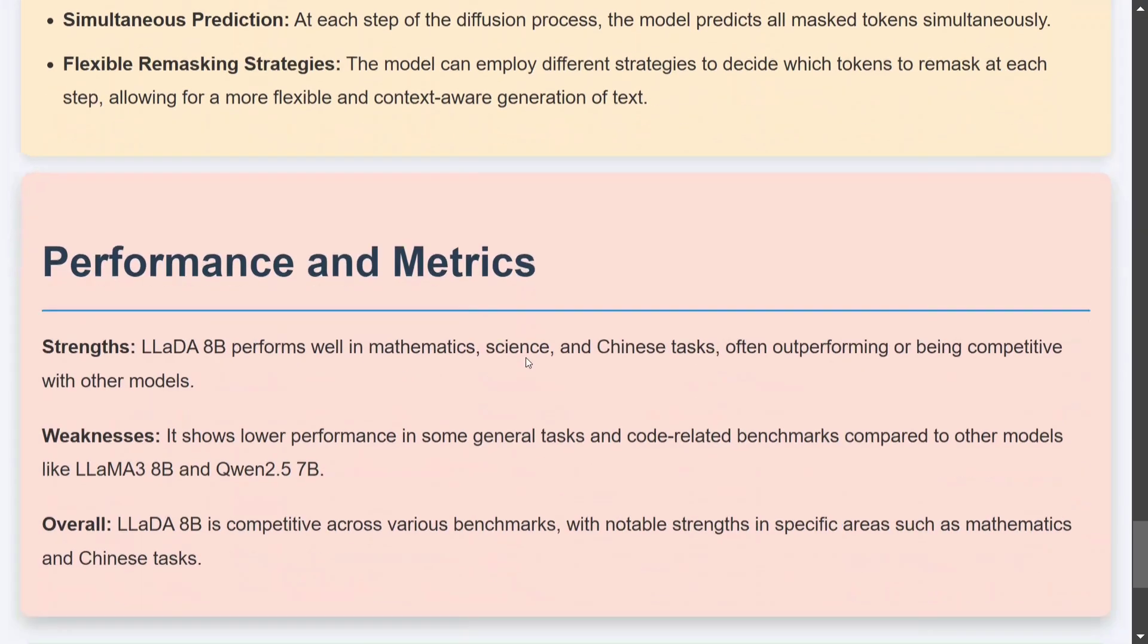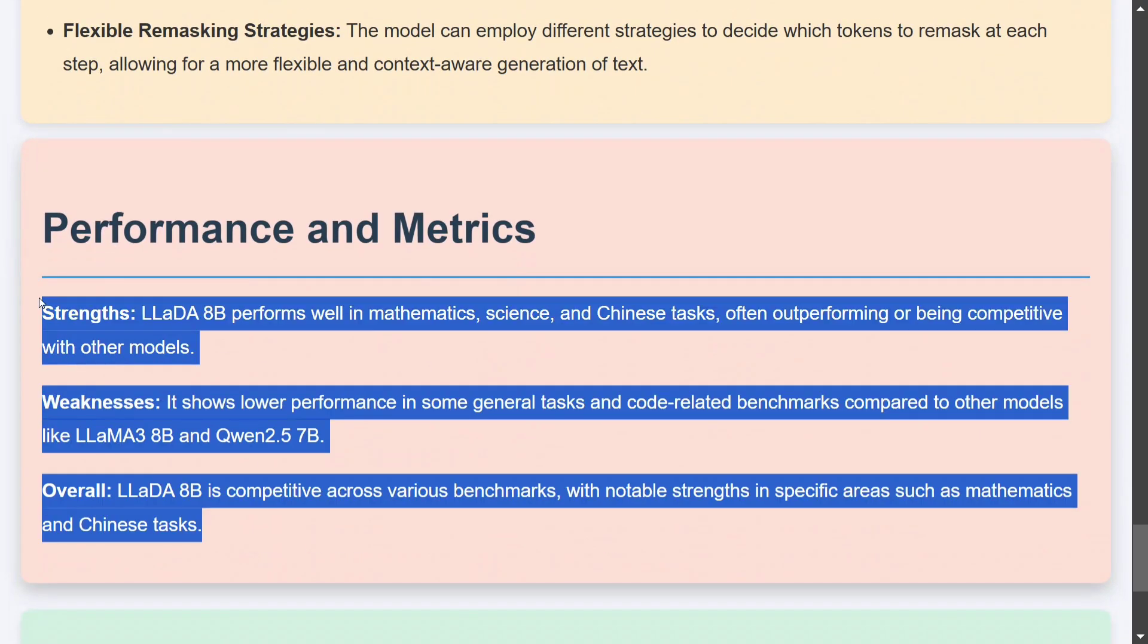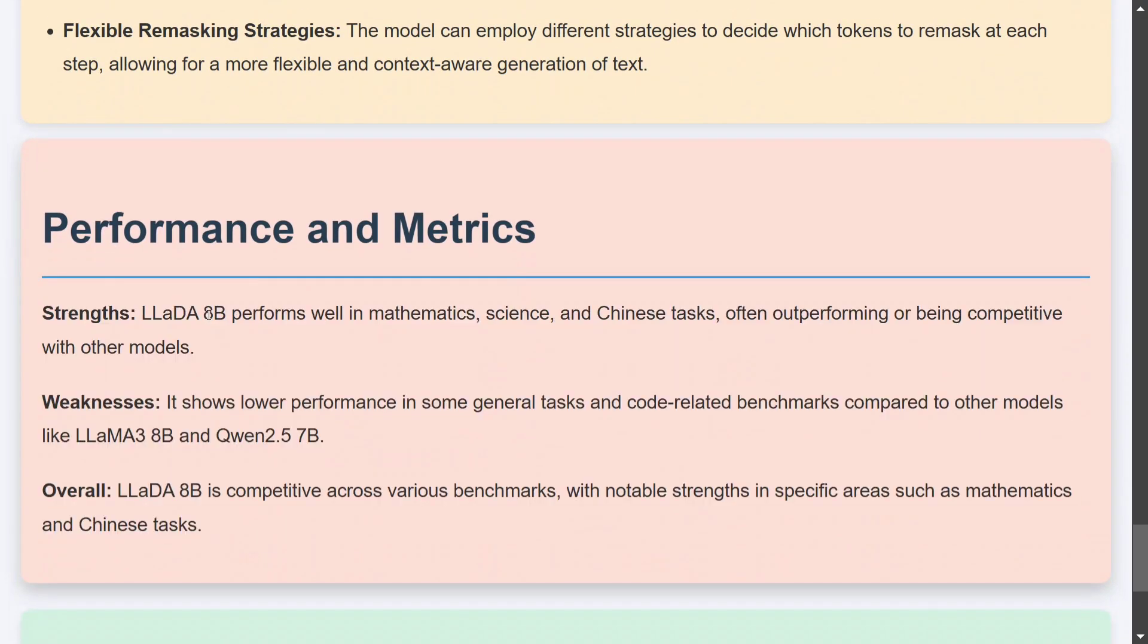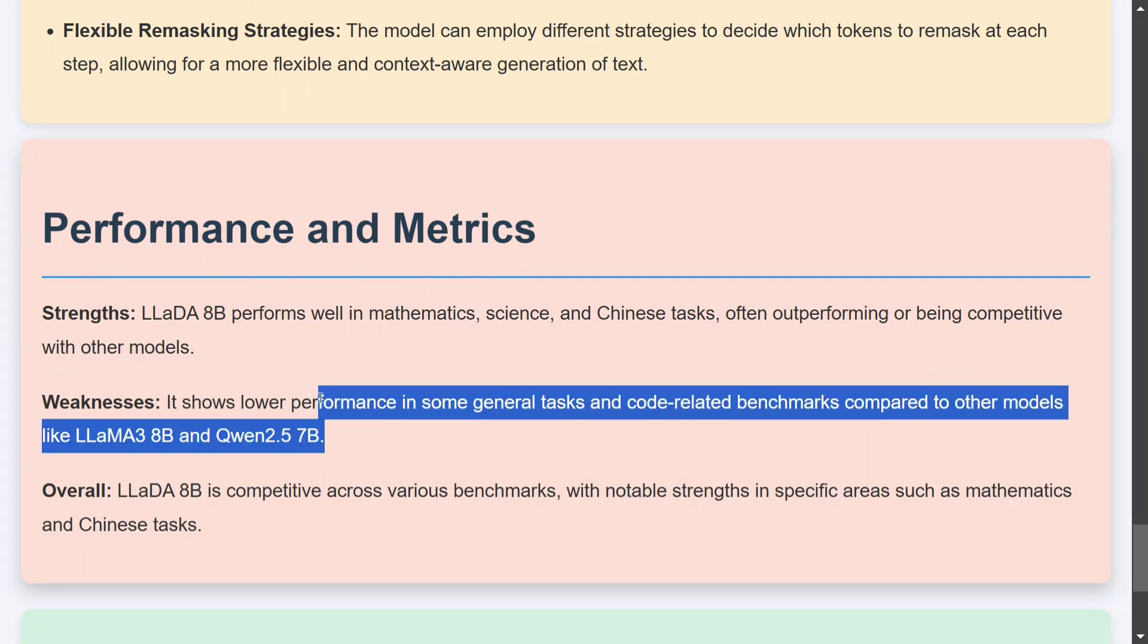Now coming to the important part: performance. LADA 8B, this is a new model, performs well on math, science, Chinese. It has some weaknesses towards coding and general tasks compared to Llama 3 8B or Qwen 2.5 7B. When comparing with the same range of models, LADA is quite good with math, science, Chinese task, but it's quite weak with coding and general task.